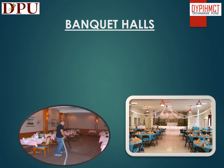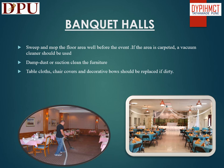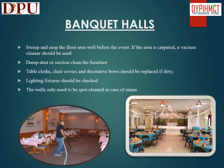In this slide we will discuss about cleaning of banquet halls. Sweep and mop the floor area well before the event; if the area is carpeted, a vacuum cleaner should be used. Damp dust or suction clean the furniture. Table cloths, chair covers, and decorative bows should be replaced if dirty. Lighting fixtures should be checked. The walls only need to be spot cleaned in case of stains.